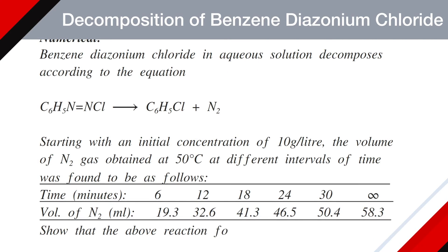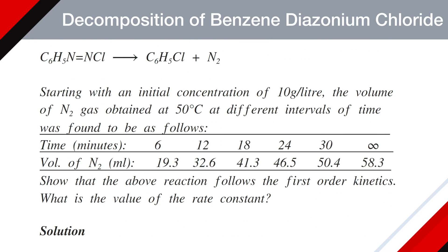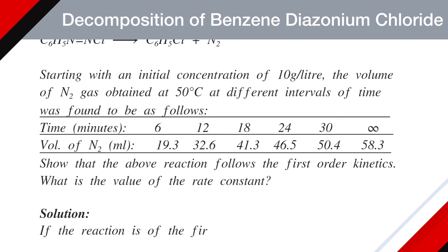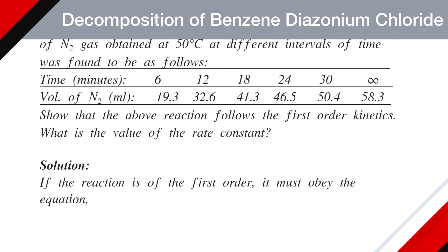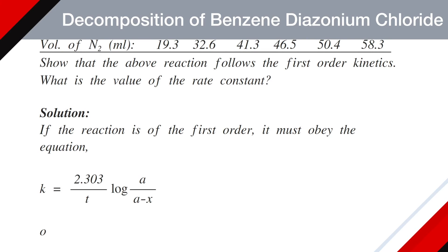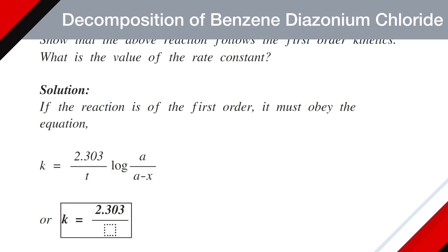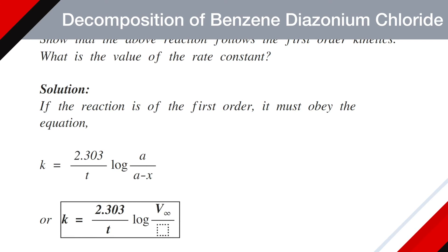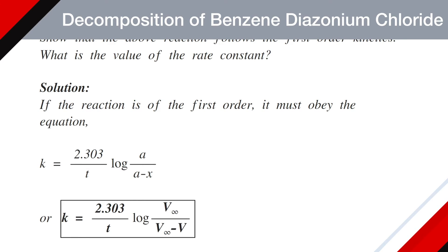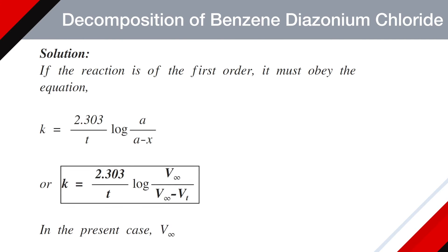Show that the above reaction follows first-order kinetics and find the value of the rate constant. If the reaction is of first order, it must obey the equation K equals 2.303 divided by T, log of V∞ divided by (V∞ minus Vt). In the present case, V∞ is 58.3 mL, so the value of K at each time can be calculated from the above equation.